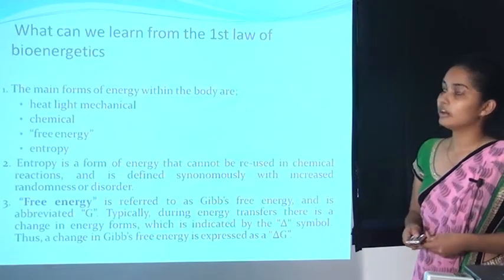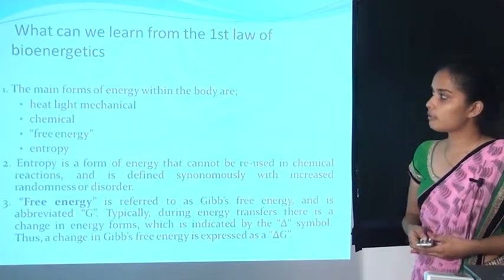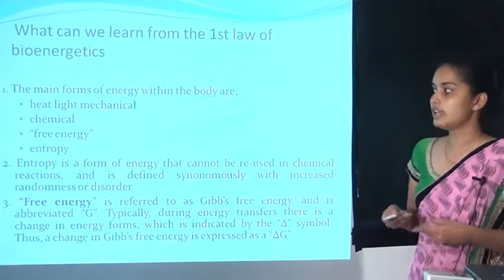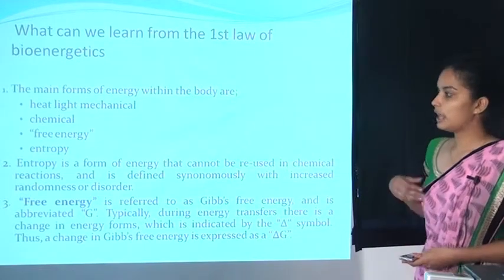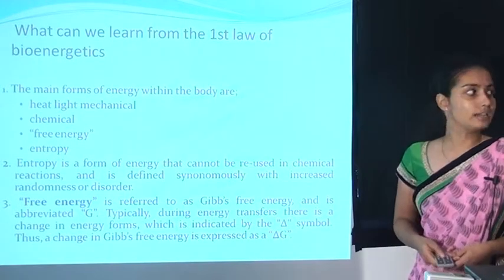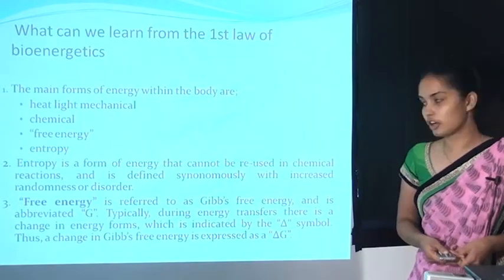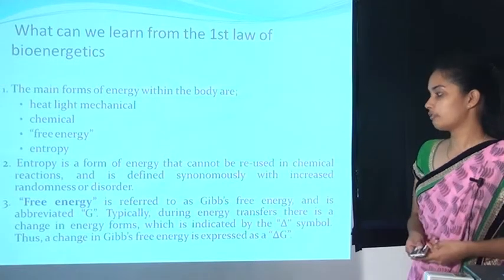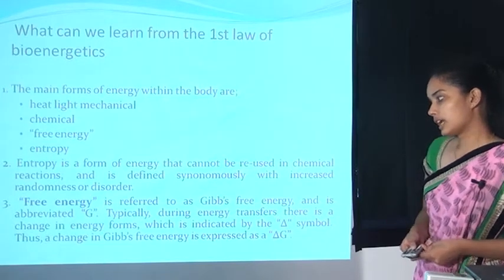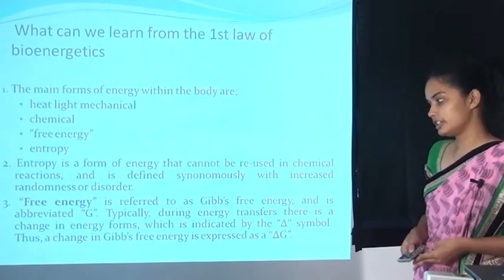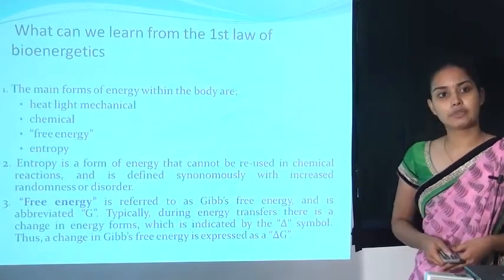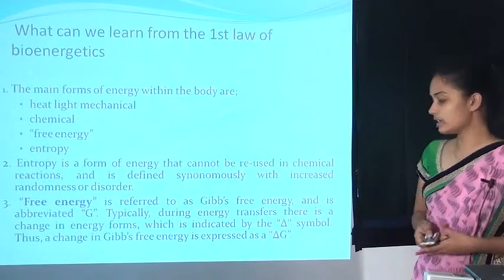What can we learn from the first law of bioenergetics? The main forms of energy within the body are heat, light, mechanical, chemical, free energy, entropy, etc. Entropy is the form of energy associated with increased randomness or disorder. Free energy is referred to as Gibbs free energy, abbreviated as G. During energy transfers, a change in energy forms is indicated by the symbol delta, so a change in Gibbs free energy is expressed as delta G.